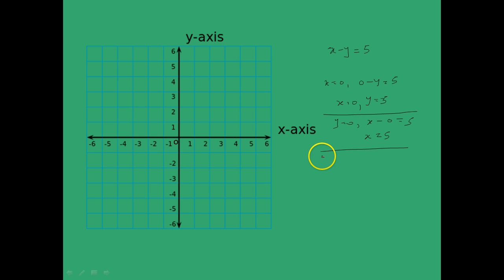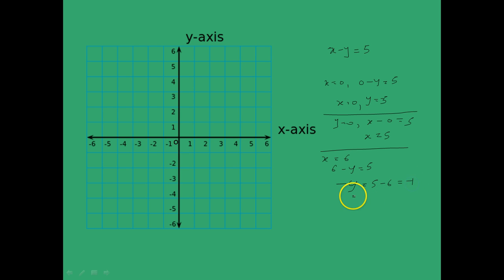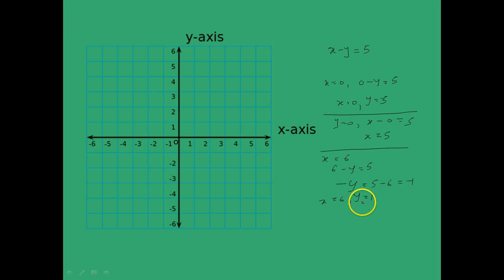Let's take x equal to 6. We get 6 minus y equal to 5. Subtracting 6 from both sides gives minus y equal to minus 1, and multiplying both sides by minus 1 gives y equal to 1. So x equal to 6 and y equal to 1 is another solution.